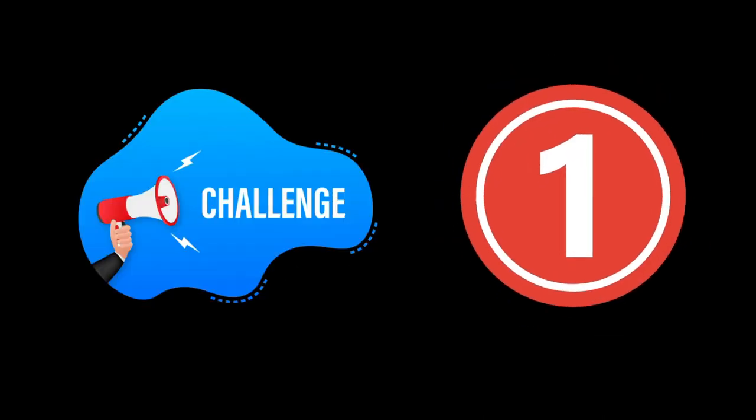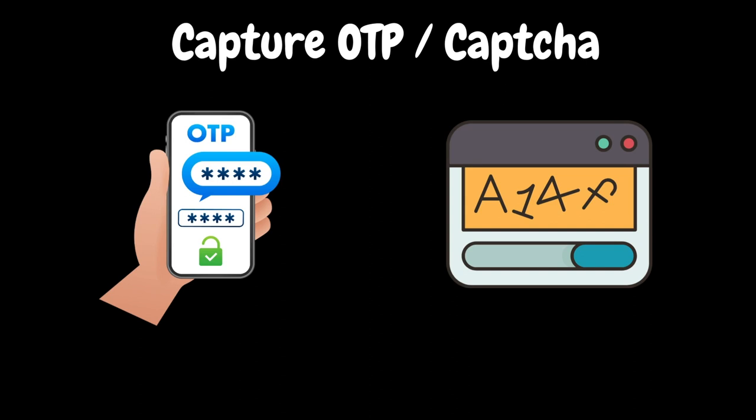Our first challenge is capturing OTP or CAPTCHA. OTP is a one-time password, and CAPTCHA is a Completely Automated Public Turing Test to tell Computers and Humans Apart. This is a common interview question — how to handle OTP or CAPTCHA in your application during performance testing.